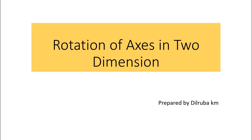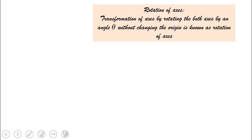Today we are going to discuss rotation of axis in two dimensions. Rotation of axis is the transformation of axis by rotating the x-coordinate and y-coordinate axes by an angle theta without changing the origin.